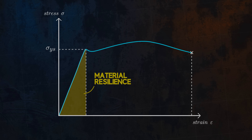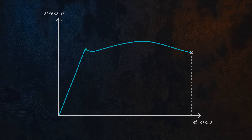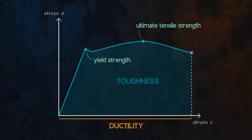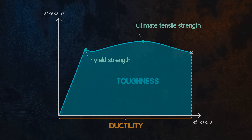Materials with high resilience are well suited for applications where plastic deformation is to be avoided. To summarize: the yield strength of a material defines the stress at which it begins to deform plastically. The ultimate tensile strength defines the maximum stress which is reached during the tensile test. Ductility is a measure of the ability of a material to deform plastically before fracture. Toughness is a measure of the ability of a material to absorb energy up until fracture. And resilience is a measure of the ability of a material to absorb energy while deforming elastically.